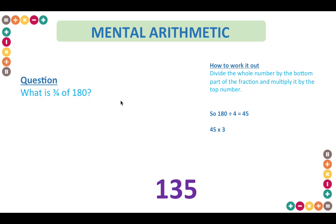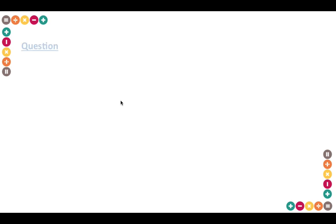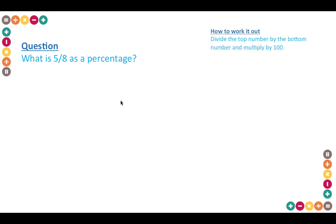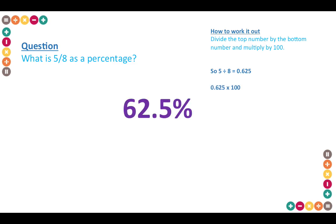Another example of mental arithmetic — what is five eighths as a percentage? For these types of questions, if you divide the top number by the bottom number and then multiply by 100 you can convert the fraction into a percentage. So five divided by eight gives you 0.625. To convert this decimal to a percentage, multiply by 100, which gives you 62.5.